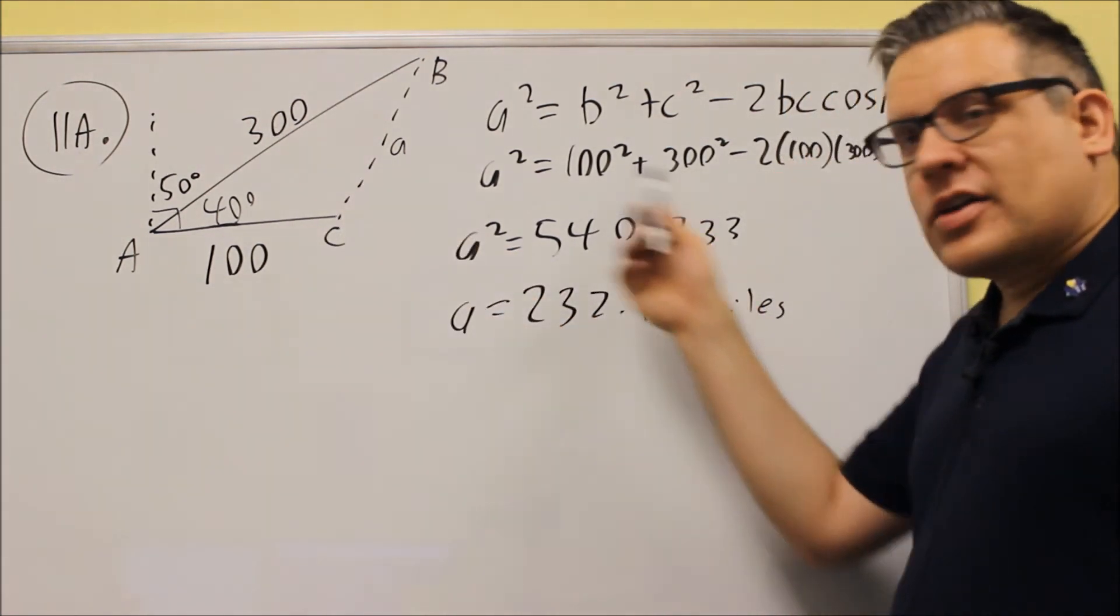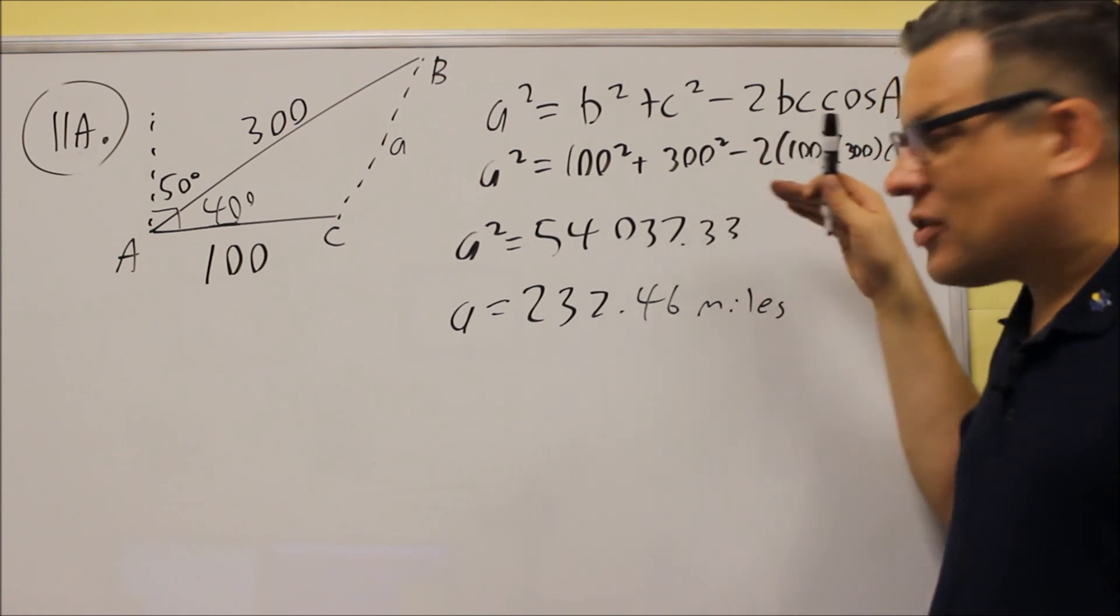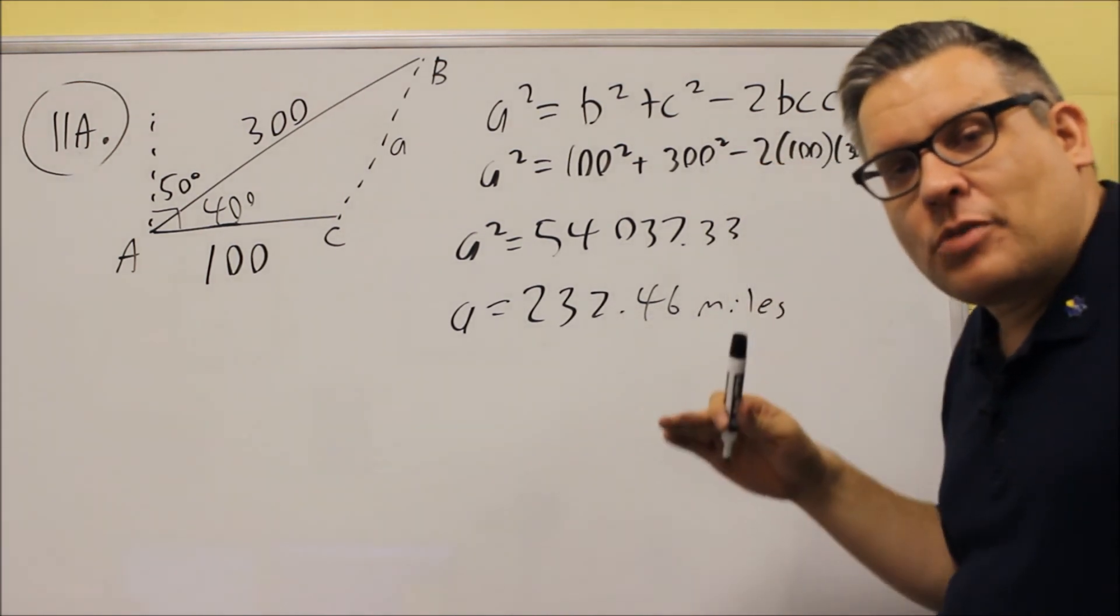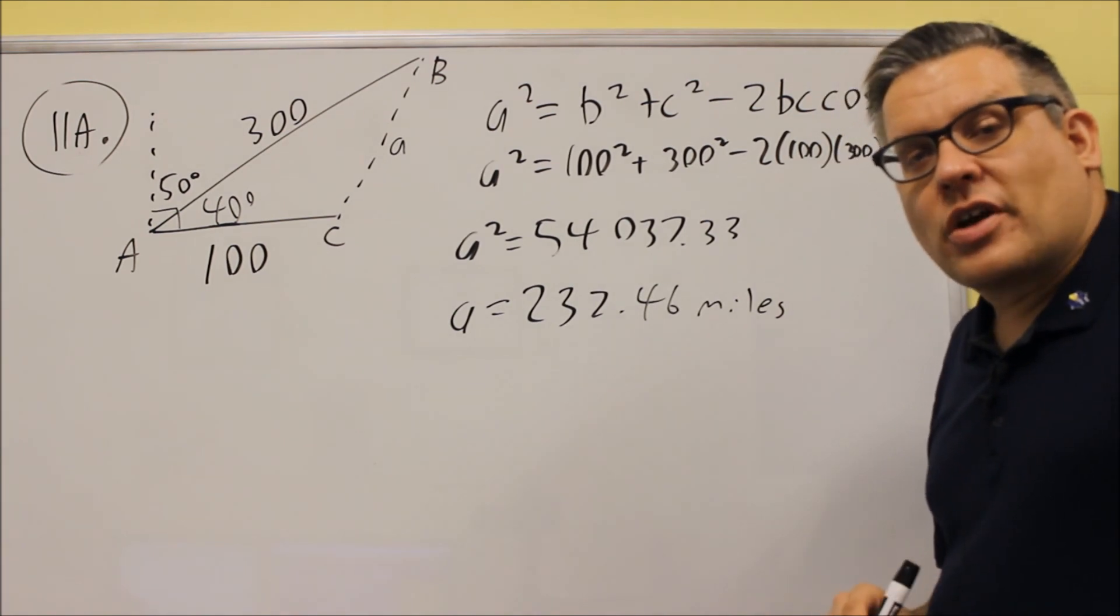But if you think about it, the answer should make sense with the other numbers you have here. And so if you have 100 and 300, it wouldn't make sense that one side is 54,000. So if you get something that's real big like that, then chances are you probably haven't taken the square root yet. So your answer is 232.46.